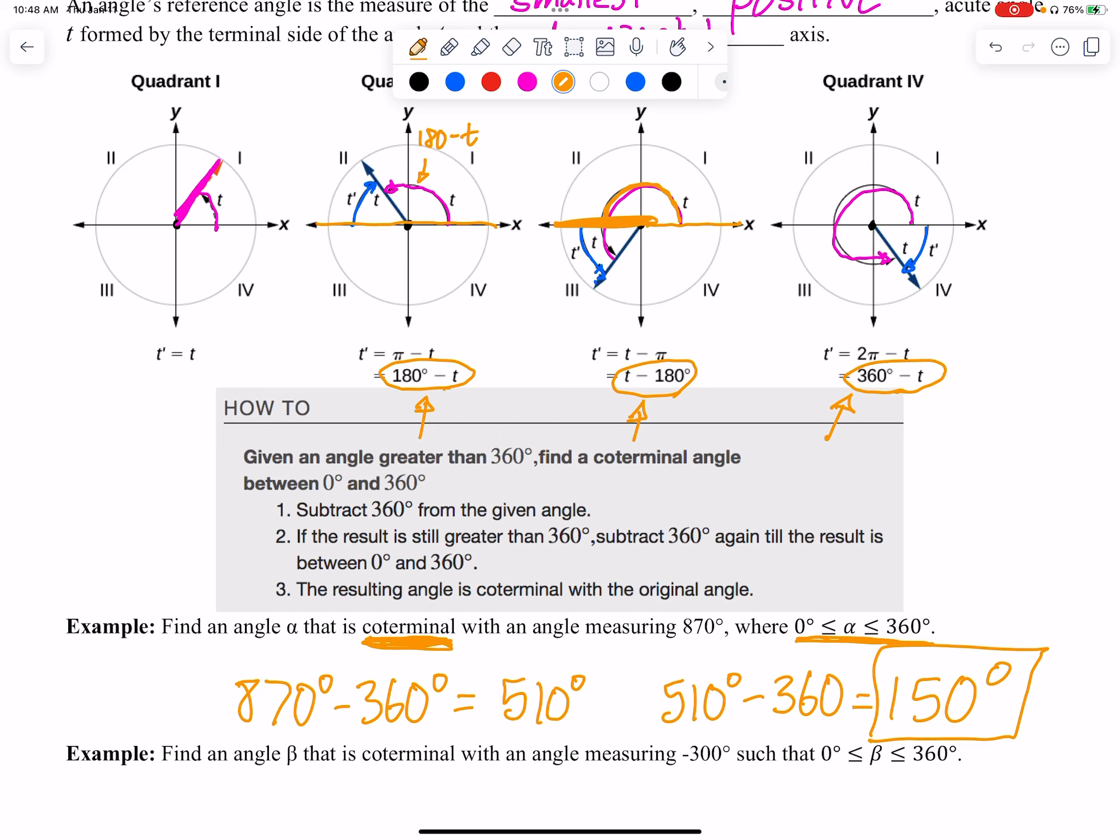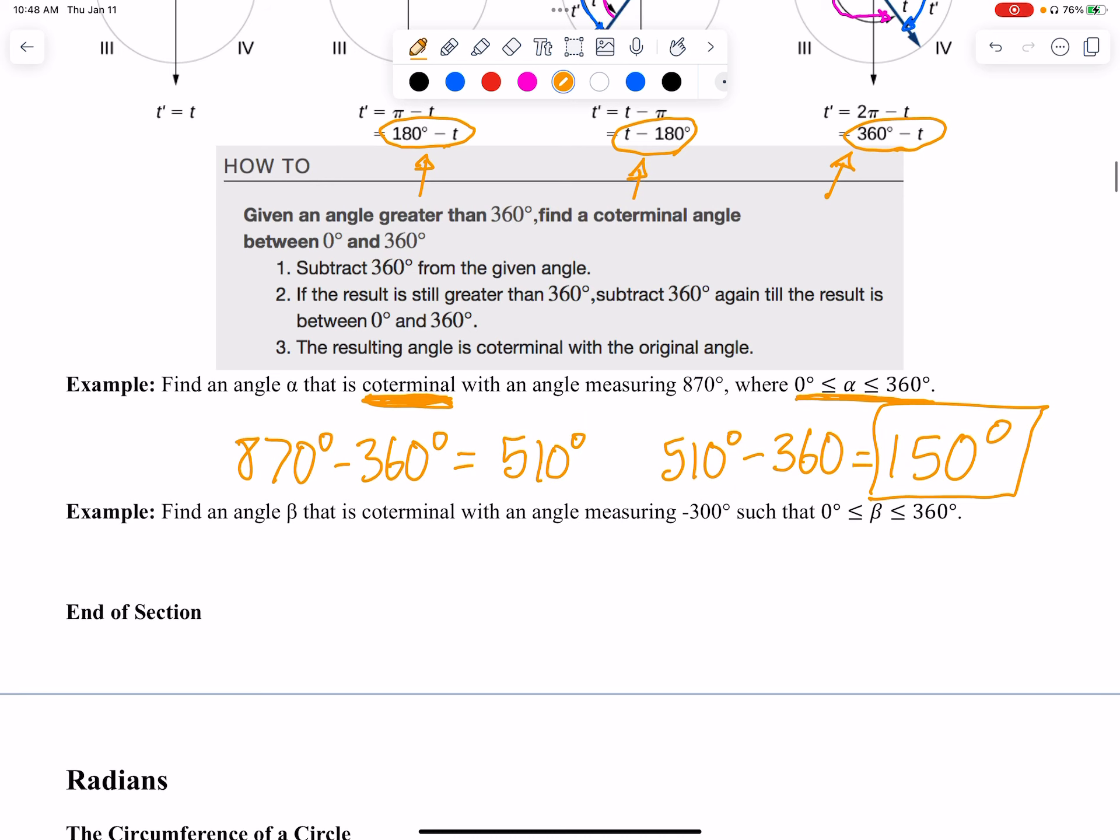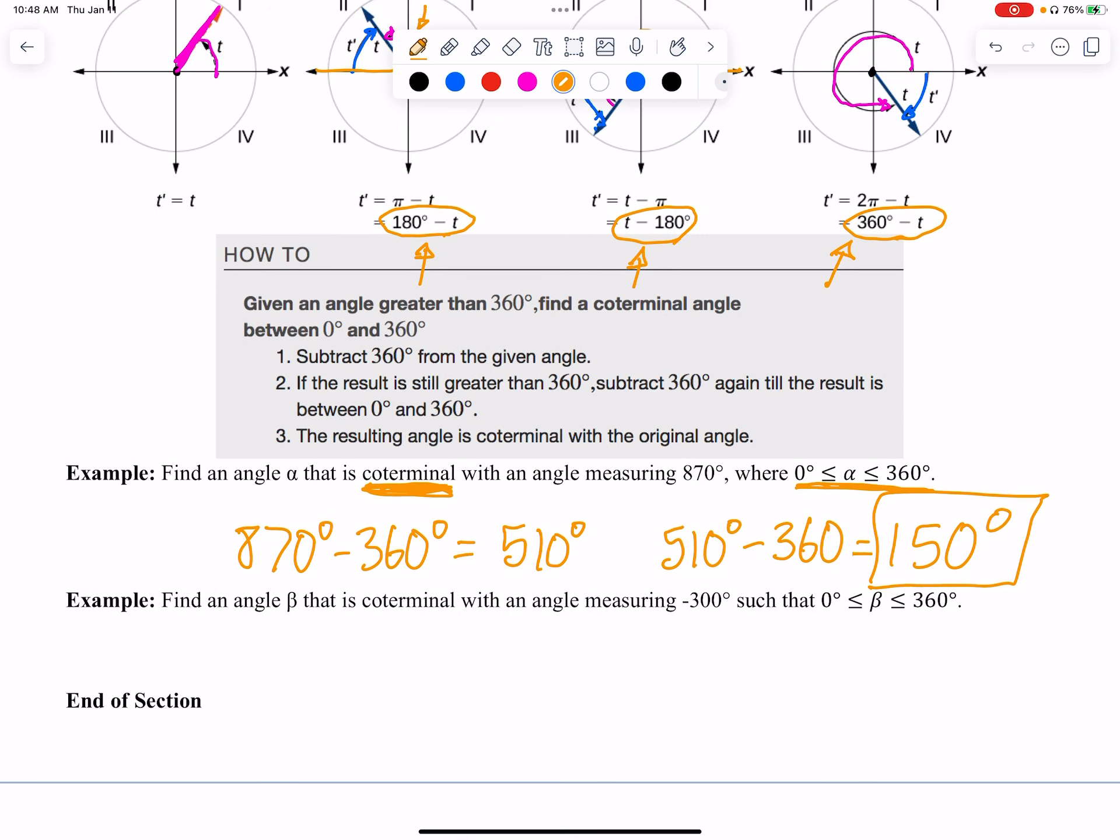All right, that's how you deal with it when the angle is very big. Now, if the angle is very small, meaning negative, so find an angle β that is coterminal with an angle measuring negative 300°. So, and we want it to end up here, between 0 and 360°. So, I'm going to take negative 300°, and I'm just going to add 360° to it, because that's a full revolution, leaving me with 60°. So, the answer here is 60°. 60° and negative 300° would land at the exact same place.